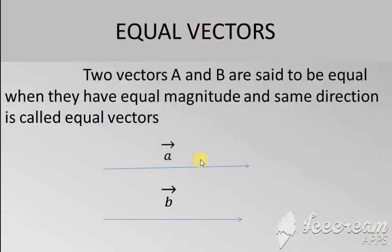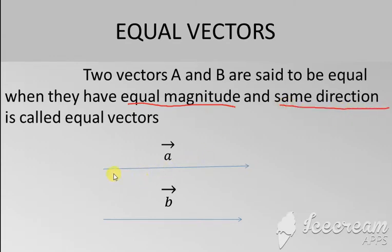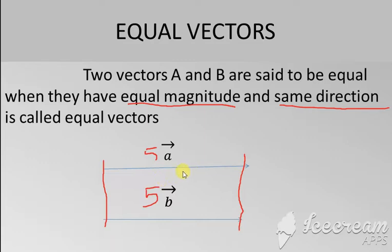The first one is equal vectors. We have two vectors named A and B. If these two vectors have equal magnitude and also the same direction — magnitude means value — if this value is 5 and the same way this value is also 5, you can say they have the same magnitude and same direction. Then they are said to be equal vectors.